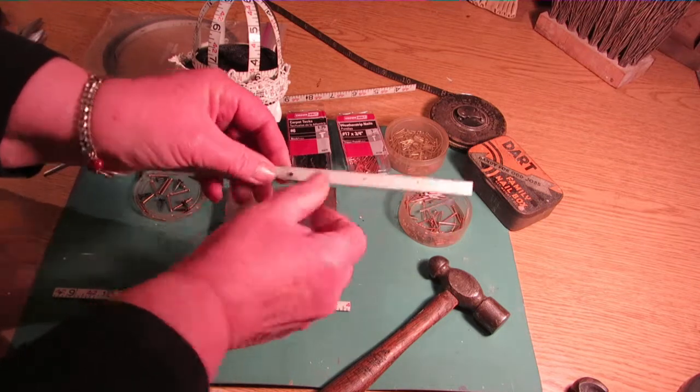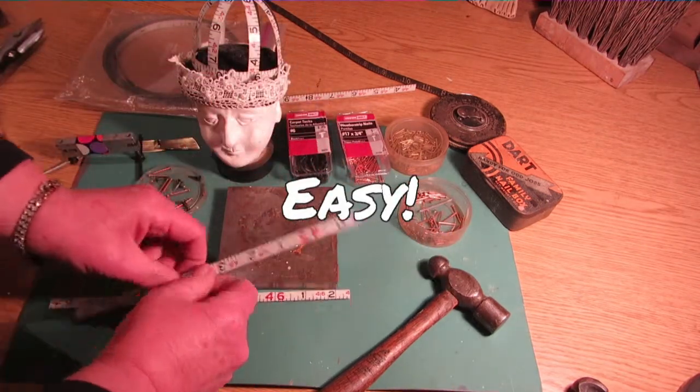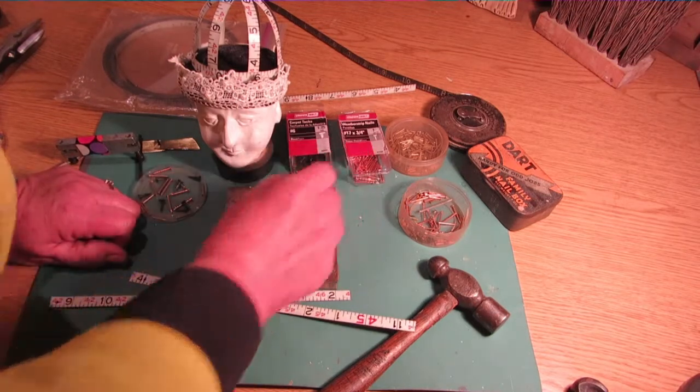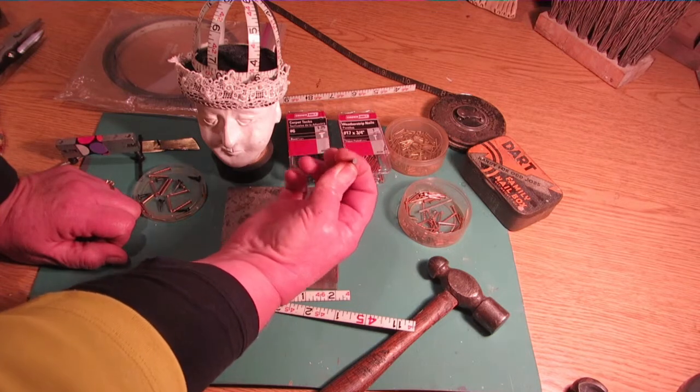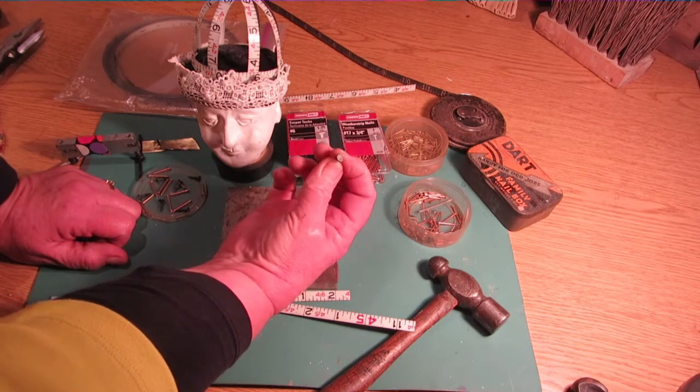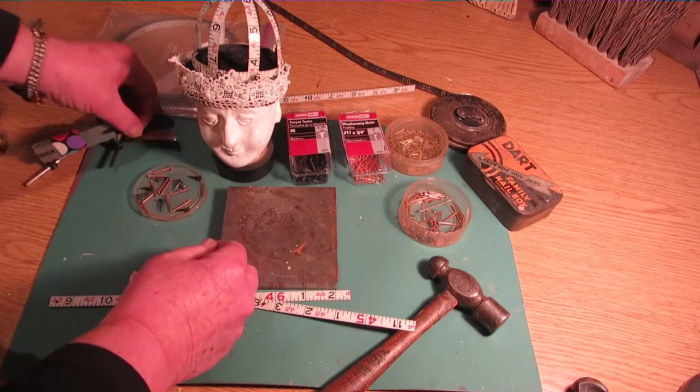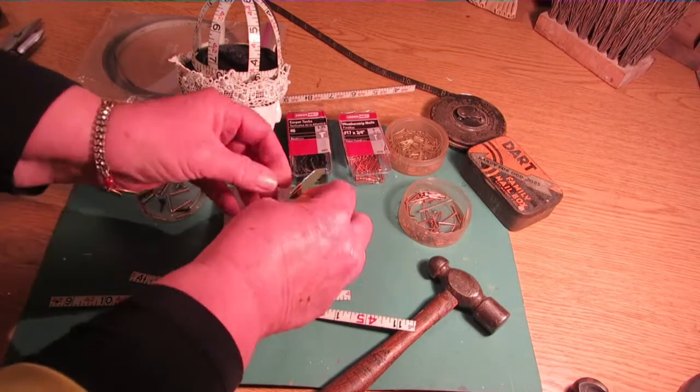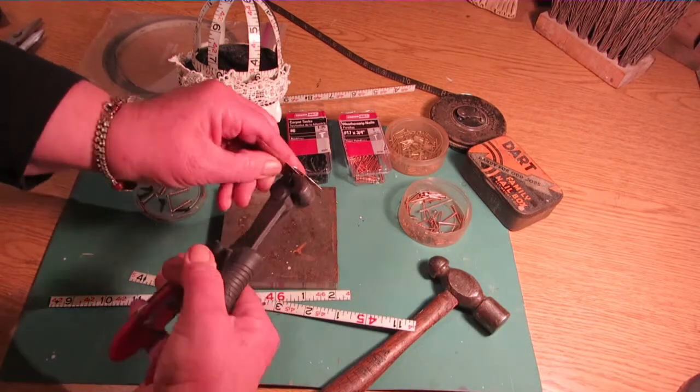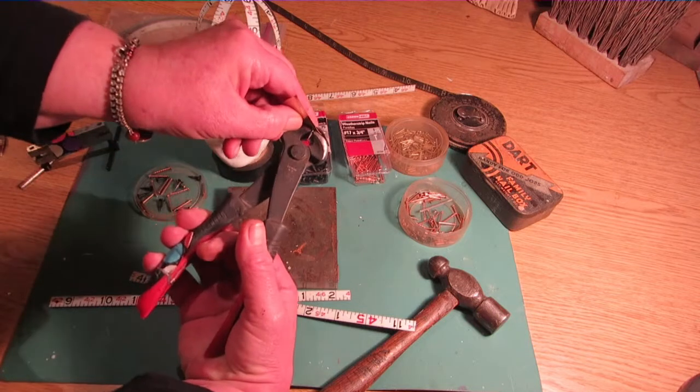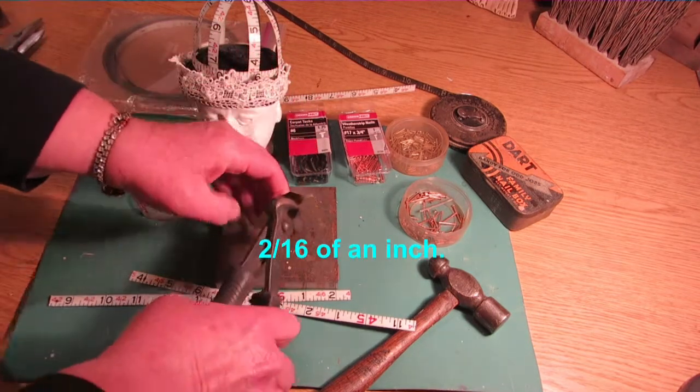Easy. You can use different kinds of nails with different kinds of heads on it. This is a carpet tack—it has this really nice broad head on it. I have a couple of pieces of scrap I'll rivet together here. Again, snip it really close to the metal, only a fraction of an inch.